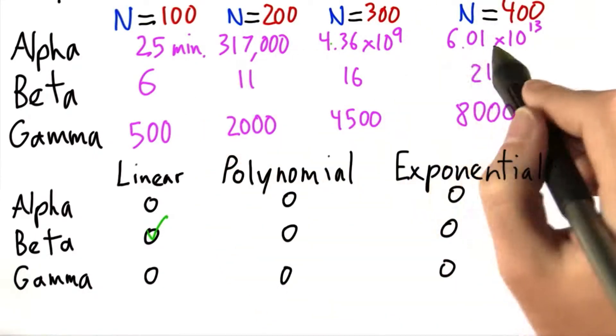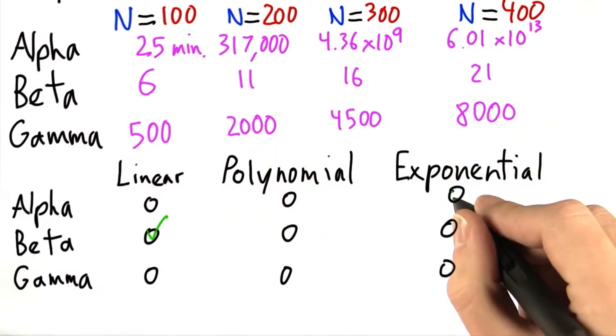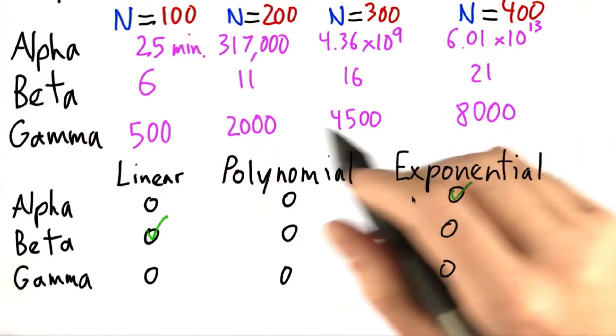So I think it's reasonable to say that alpha has an exponential running time.